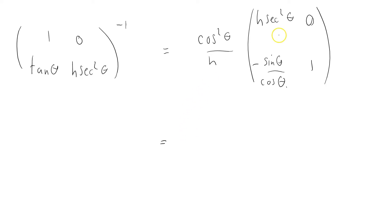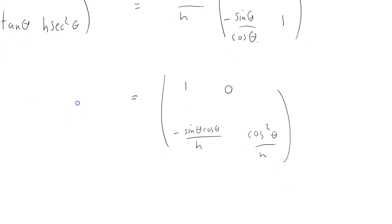I'm just going to simplify this inverse matrix here. So that's (1, 0; -sin θ cos θ/h, cos²θ/h). So that's my matrix inverse.